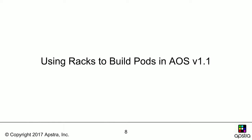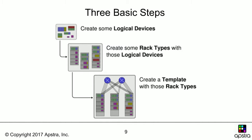Let's talk about using racks as building blocks to build pods inside of AOS version 1.1. Inside AOS there are three overall steps: first, we create what we call logical devices; from those logical devices we create different rack types; and from those rack types we create a design template — basically designing our pod using racks as building blocks. We'll go into each of these steps in more detail.